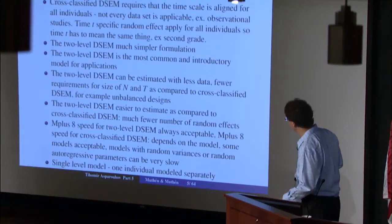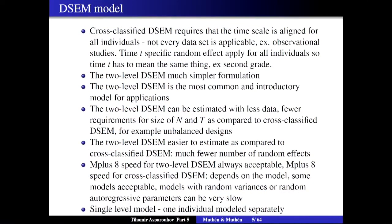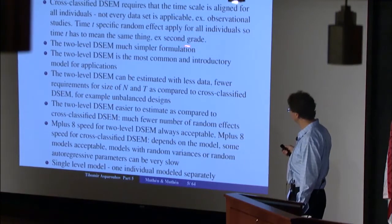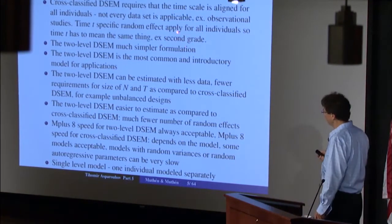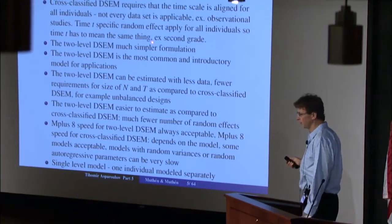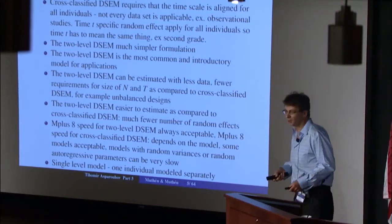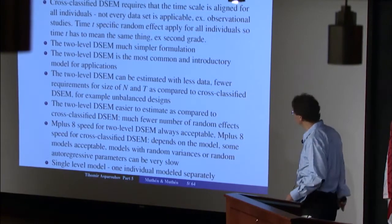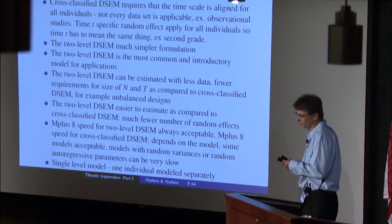The cross-classified is the most general model, but it is also the hardest to estimate. A key requirement is that the time scale must be aligned between individuals — time t must mean the same point in time for every individual, such as 'second grade' meaning the same thing for everyone. If the time scale is not aligned, for example in observational studies where time one simply means when you started observing the individual, then the cross-classified model generally does not apply.